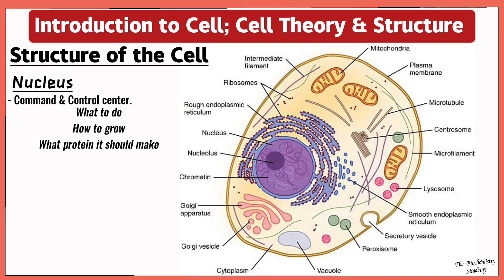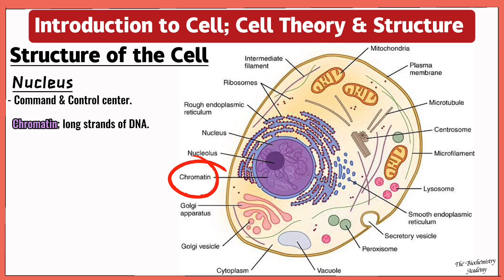Inside the nucleus there are straight-like structures, and these straight-like structures are called the chromatin, which are long strands of DNA. Now the DNA is simply the instruction manual we talked about in our chemistry of nucleic acids. This DNA stores genetic information of the cell. So inside the nucleus you also have a ball-like structure called the nucleolus.